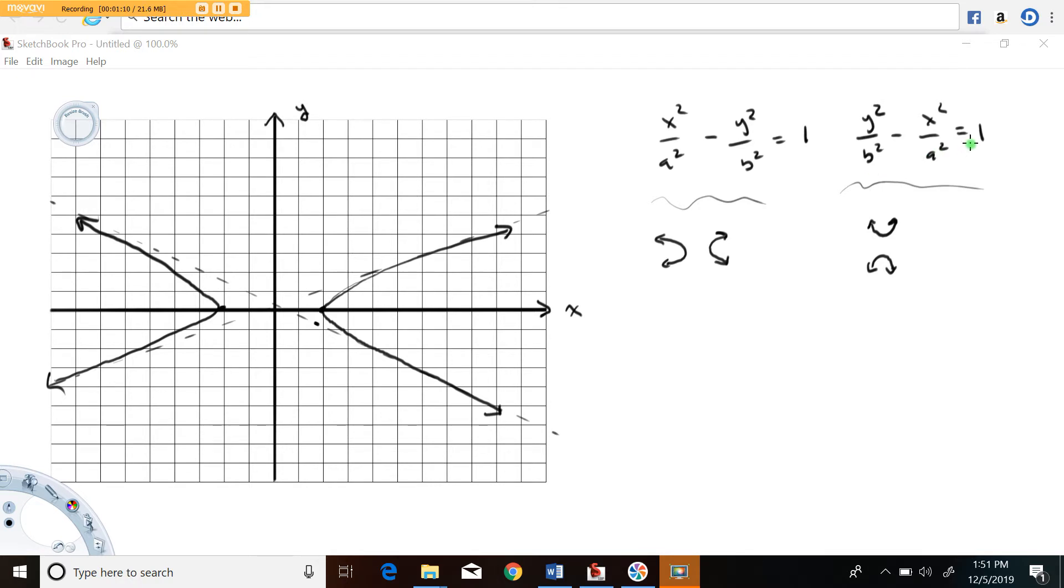First of all, when we take a look at this, you'll notice that this equation has no solution for x equals zero. You put in zero for x, this term is gone, and it reads minus y squared over b squared equals one. You don't get a real solution out of that. That's why this thing corresponds to a horizontal hyperbola.